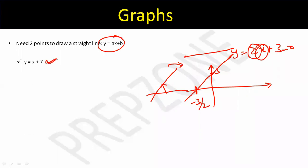Everyone, quickly plot y = x + 7 and the second graph in your notebook. The first is a straight line and the second is going to be a parabola. If anyone has issues plotting these graphs, let me know now — I'd expect everyone knows how to plot them.